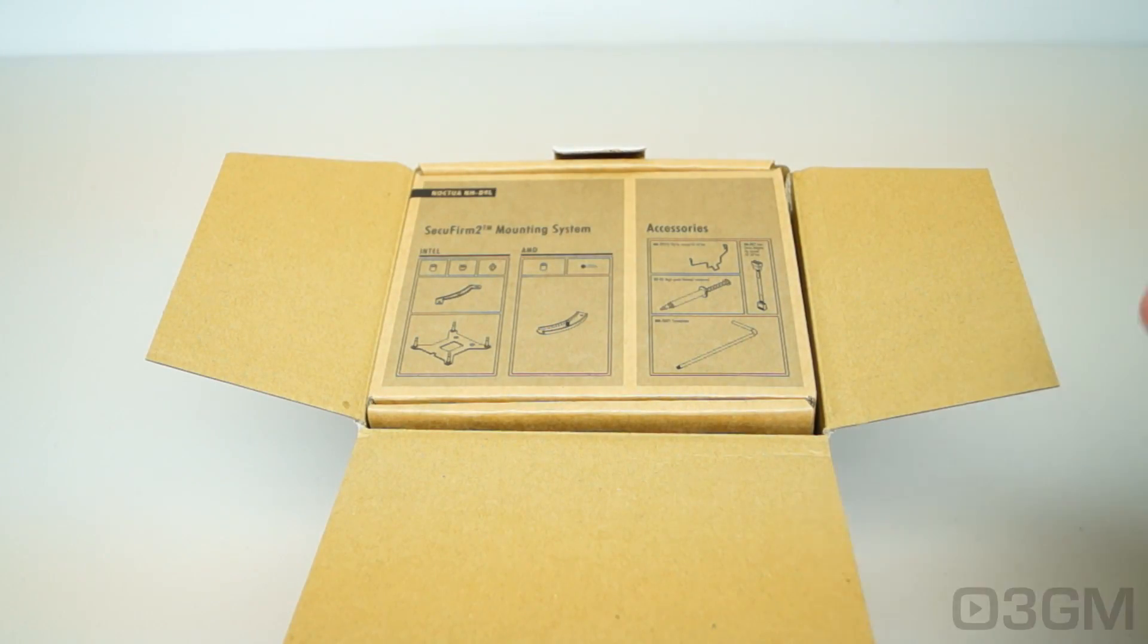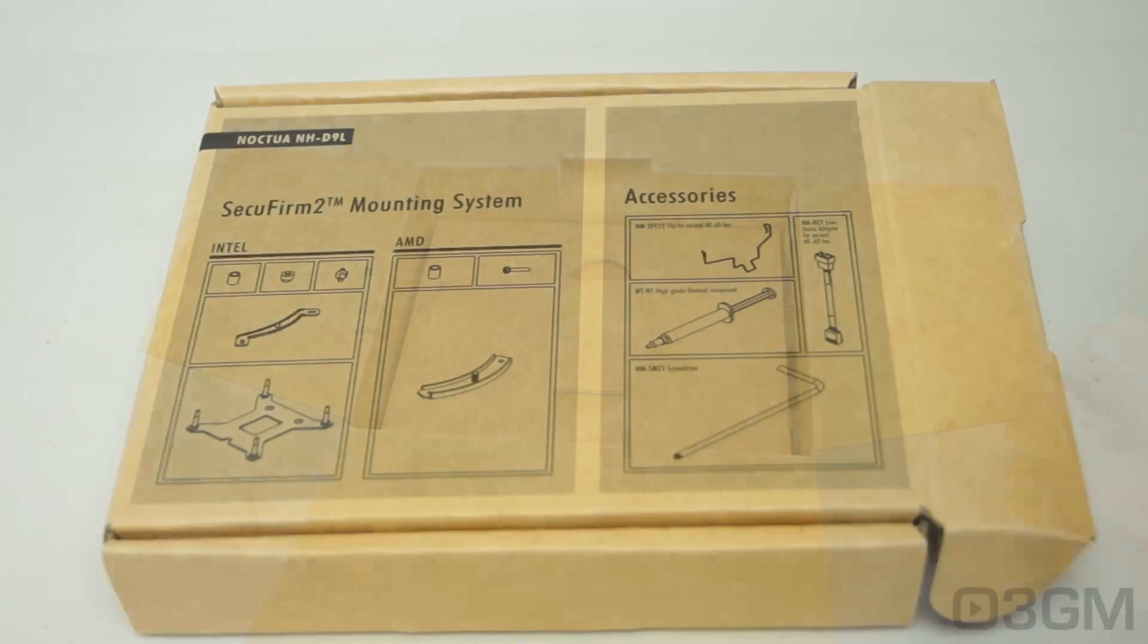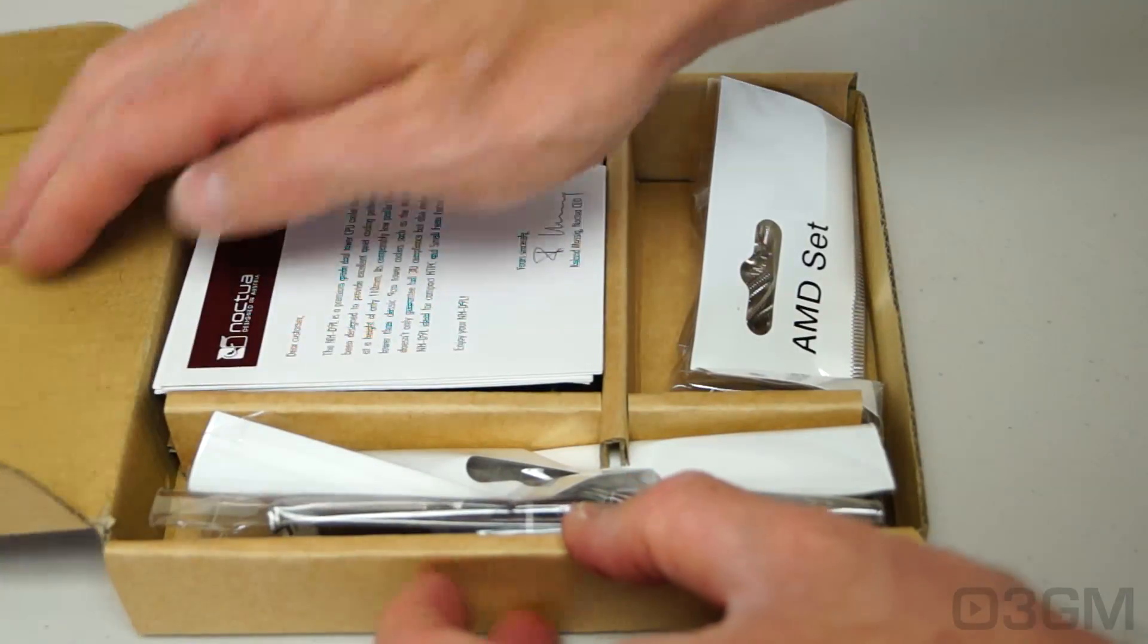Like all Noctua products, they are packaged very well. At the top you've got a box and in it the Secufirm 2 mounting system as well as the accessories. Let's go through everything that is included.